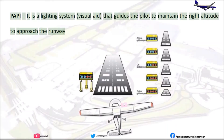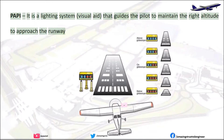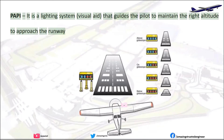PAPI (Precision Approach Path Indicator): It is a lighting system and visual aid that guides the pilot to maintain the right altitude to approach the runway.